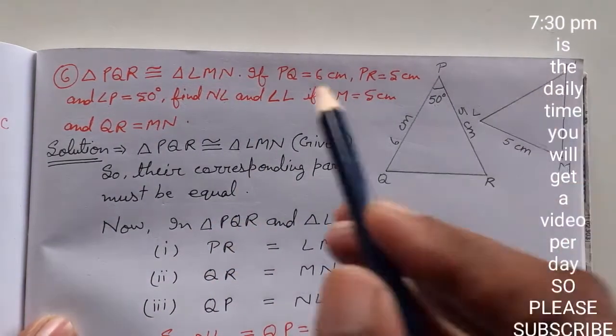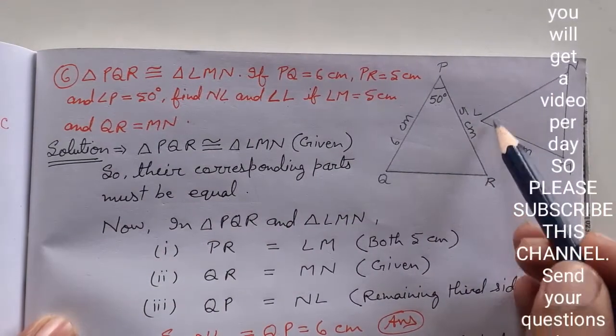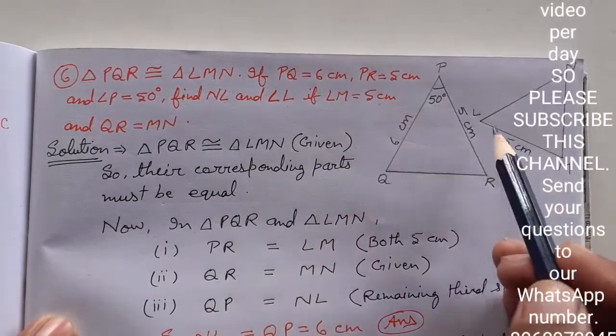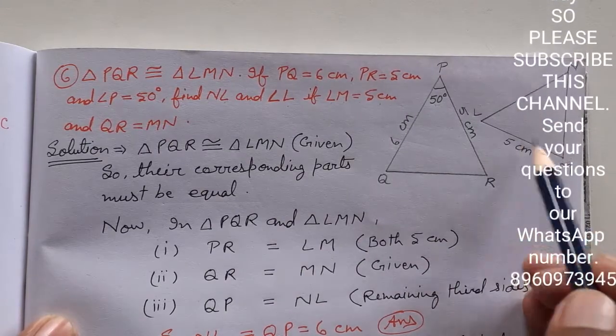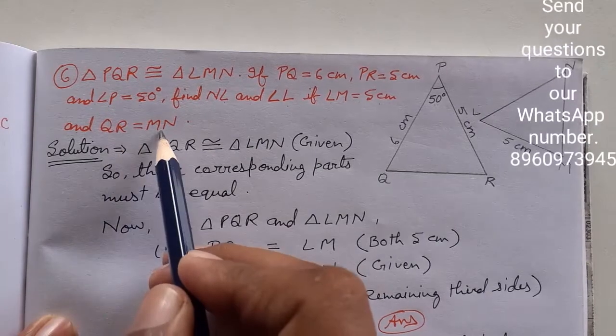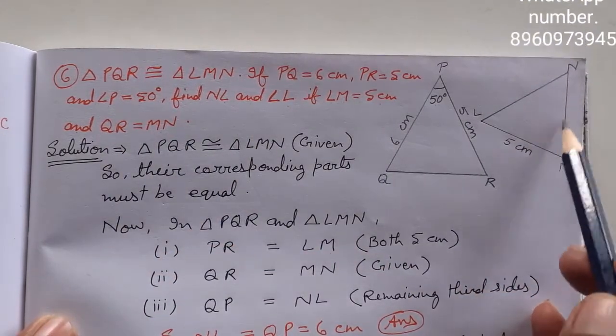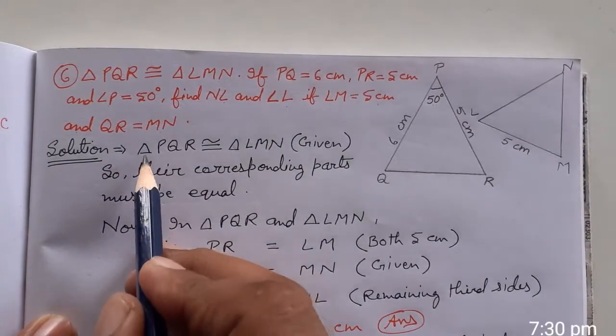You need to find NL, this line here, and angle L, this angle. The second triangle has LM equal to 5 cm, and QR equals MN. Let's see how to start.